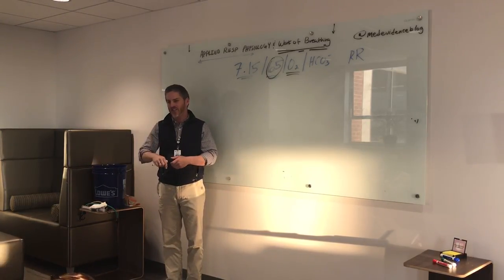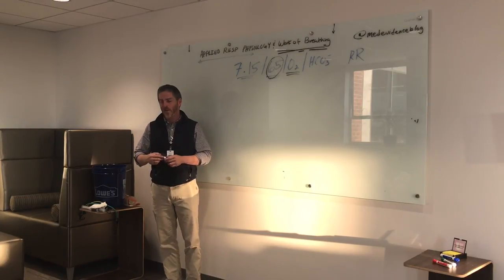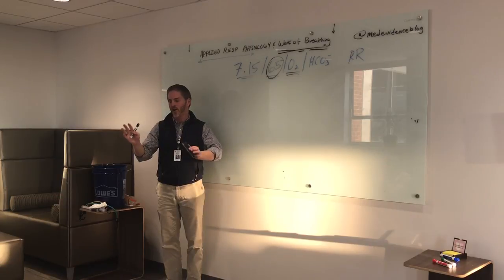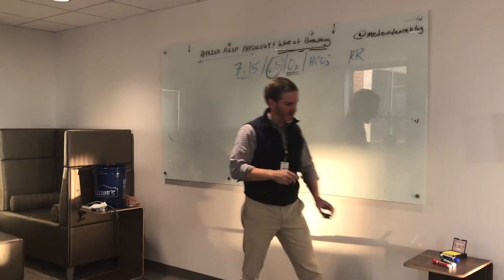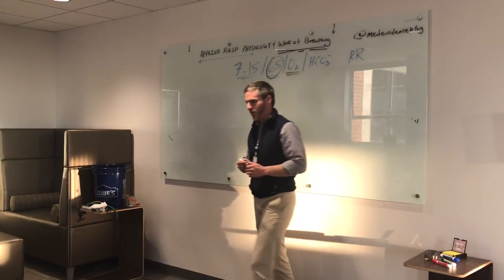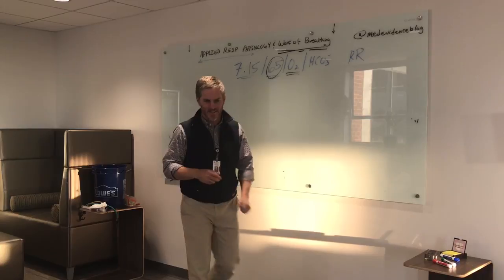So your dead space fraction is a function of your tidal volume with each breath. So by the time you're rapid and shallow, you're done. Stick a fork in you. And that's why we talk about rapid, shallow breathing, but that's a different thing. RSBI, rapid shallow breathing index, Yang, Tobin. We could have a whole talk on that. Any questions about any of that stuff? All right. I'm going to shut off the recording.